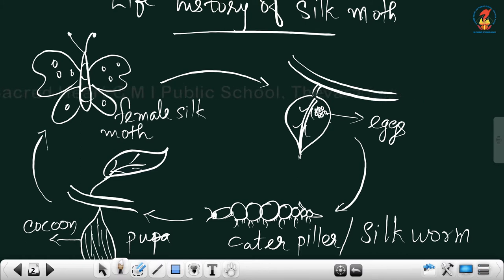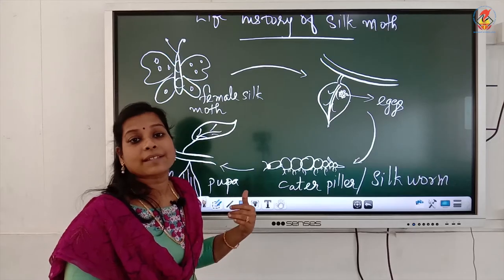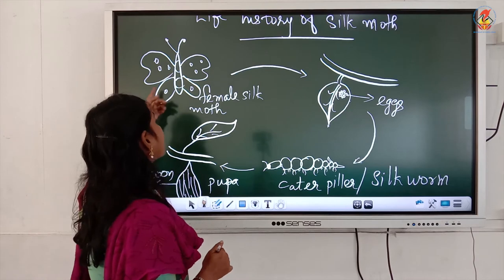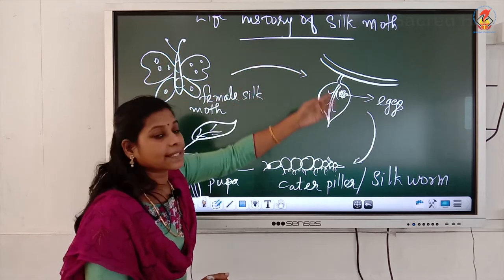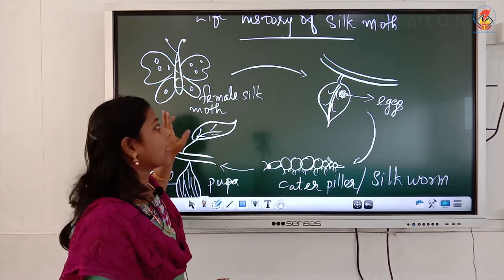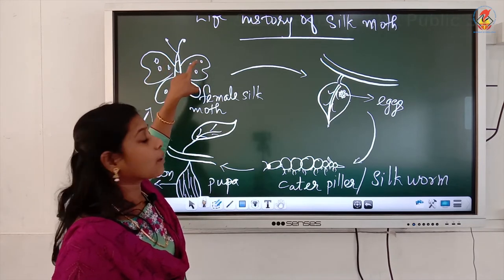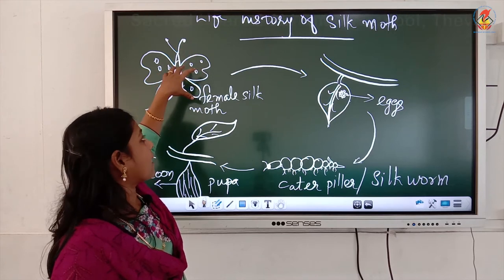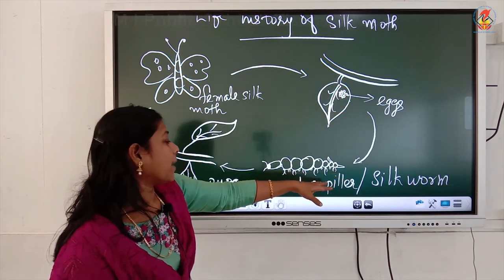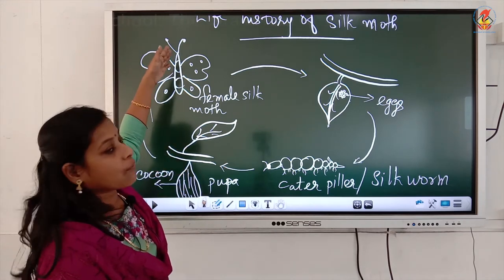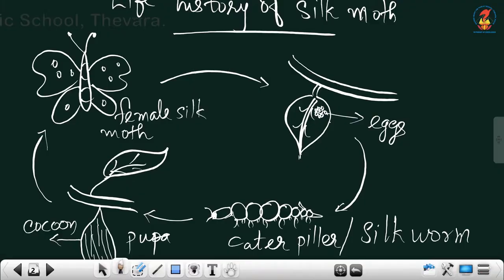During the pupa stage, the caterpillar goes into the covering known as cocoon, and inside that cocoon, further development of the silk worm into a silk moth takes place. The silk moth then comes out. This cycle is the life cycle of silk moth. If it is a female silk moth, it will lay eggs again — more than hundreds at a time — then hatching to caterpillar, then going to the pupa stage, and then again to silk moth. This life cycle repeats.